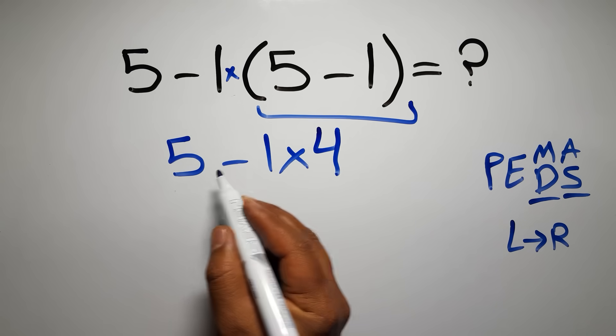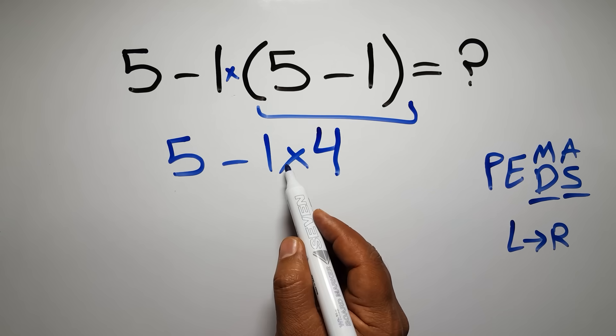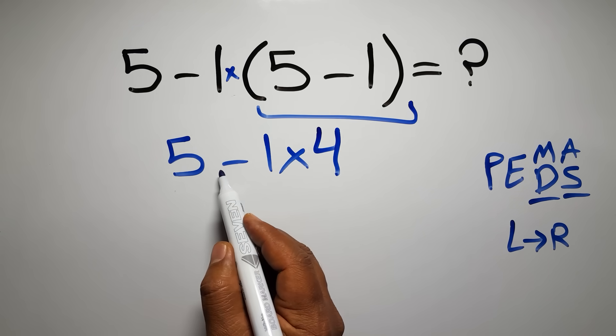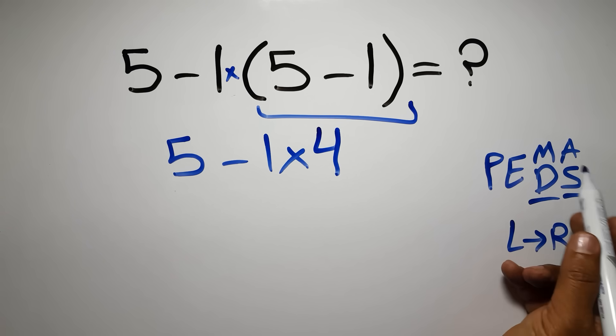Now we have one subtraction and one multiplication. According to the order of operations, multiplication has higher priority than subtraction, because in PEMDAS, multiplication comes before subtraction.